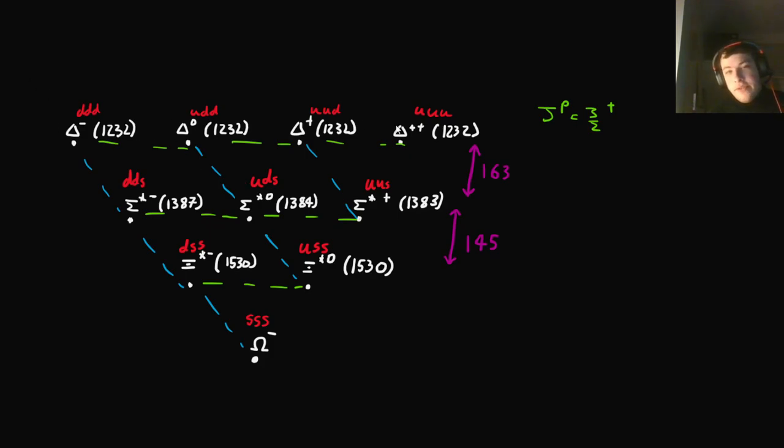Basically, because of the increased symmetry between the states, because we have all three spin-up, we have less variation in the mass. So, these are all 1232 MeV. These ones are all around 1385 MeV. And these ones are both 1530 MeV, more or less, to the nearest MeV, I think.